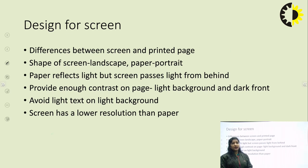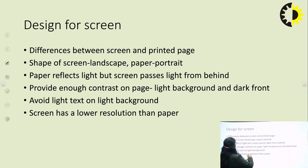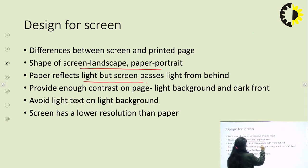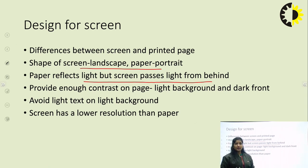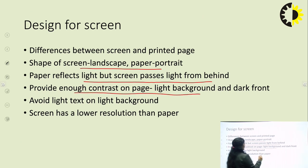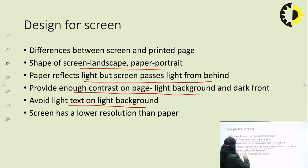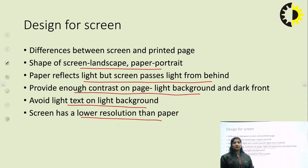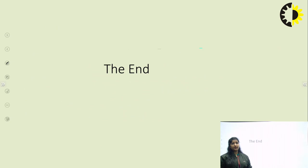The last topic is design for the screen. We have to consider the differences between the screen and printed paper. We have to account for the screen shape — landscape versus portrait paper. The screen reflects light that passes from behind, which is a challenge between screen and paper. Provide enough contrast on the page — light background with dark text — and avoid light text on a light background. The screen also has a lower resolution than paper. These are the major challenges between paper and the screen.